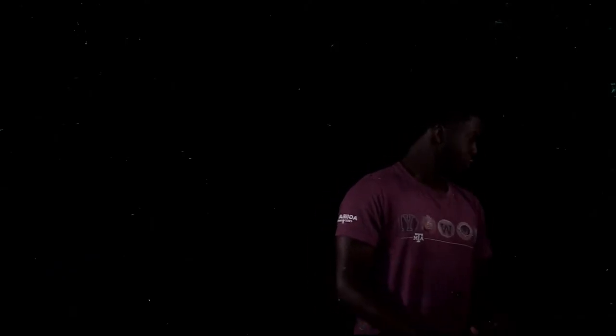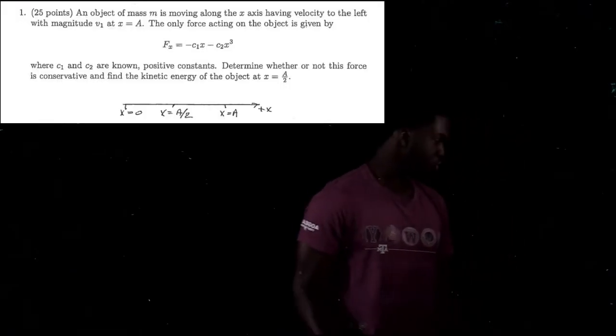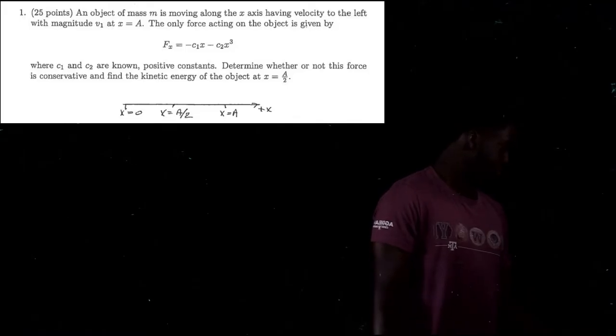Number one: an object of mass M is moving along the x-axis having velocity to the left with magnitude V1 at x equals A. The only force acting on the object is given by F(x) equals negative C1x minus C2x cubed, where C1 and C2 are known positive constants. Determine whether or not this force is conservative and find the kinetic energy of the object at x equals A over 2. They gave us a little diagram and we're going to be using that.